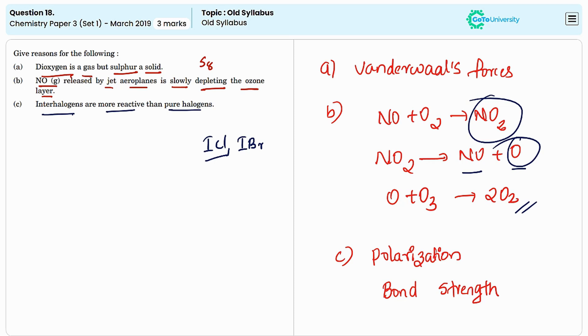And in terms of bond strength, we can say, the bond between iodine and another halogen is weaker compared to the bonds in pure halogen molecules. The weaker bond in these compounds makes them more prone to breaking and participating in chemical reactions.